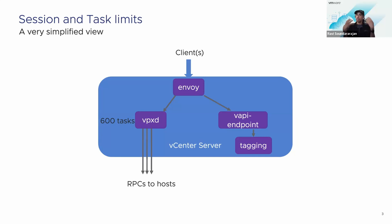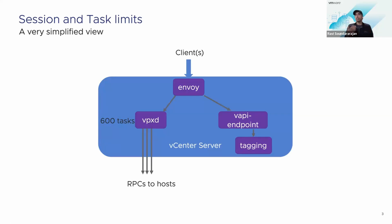The answer to that question: vCenter as a whole can handle about 600 of those sorts of tasks — these provisioning operations — before it will start queuing them up. The natural question customers then ask is, well, I'm not really doing 600 tasks, so why are things queuing up? For that, we have to consider that every task that goes into VPXD most often needs to end up communicating with a host. We throttle the number of operations that an individual host can do because hosts are there to run VMs, not to do provisioning operations. To give you the best end-to-end performance, we throttle how many we can do. And it's very often those host limits that customers are hitting, not the vCenter-wide limit.